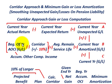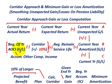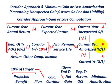Then we take our beginning of the year accumulated other comprehensive income gain or loss, subtract the corridor amount we calculate, take that quantity and divide it by the average remaining service life on our pension plan for the employees — that equals the current year amortized gain or loss. We then take our current year unexpected gain or loss and add or subtract our current year amortized gain or loss, and that equals our current year gain or loss.